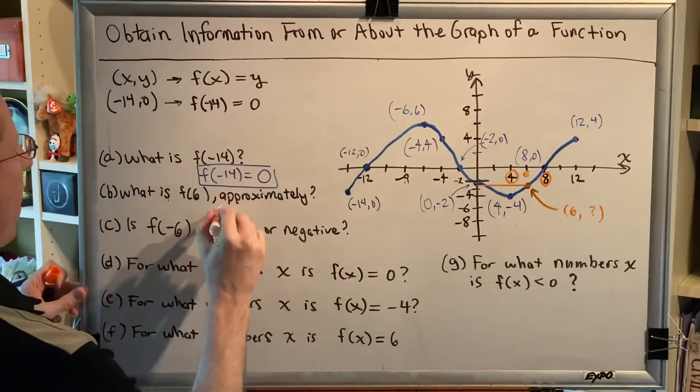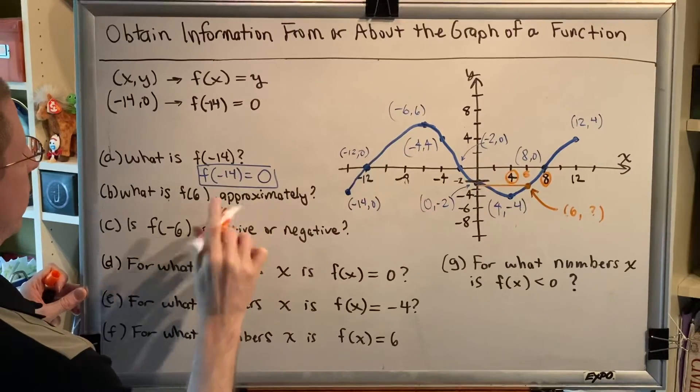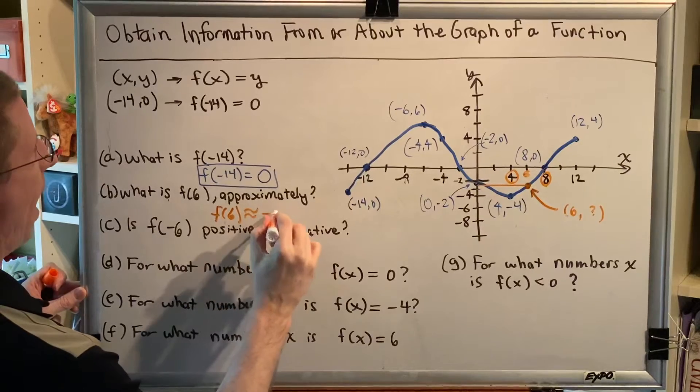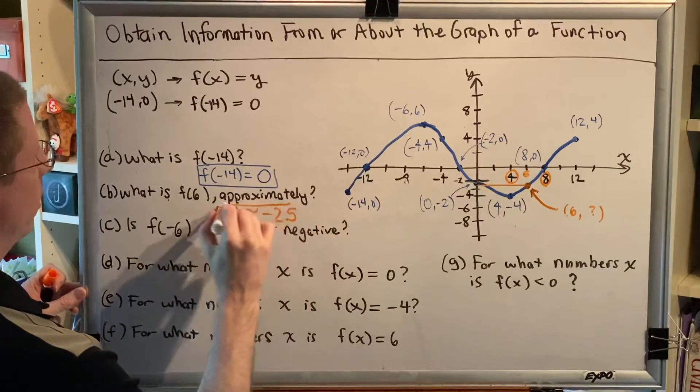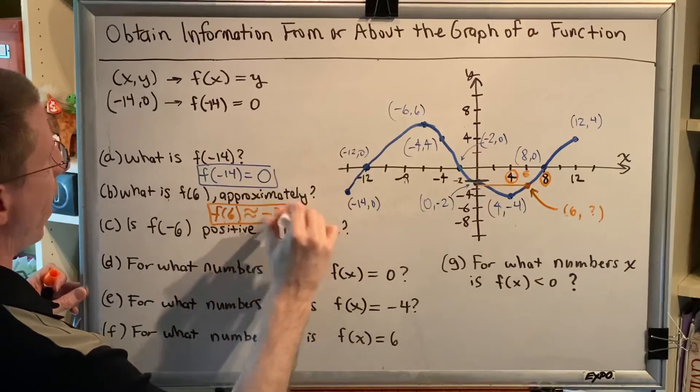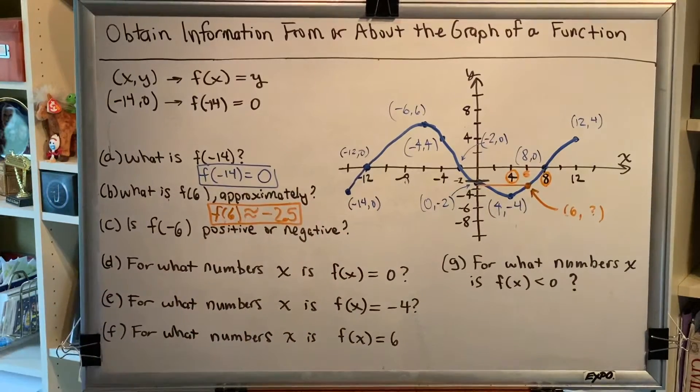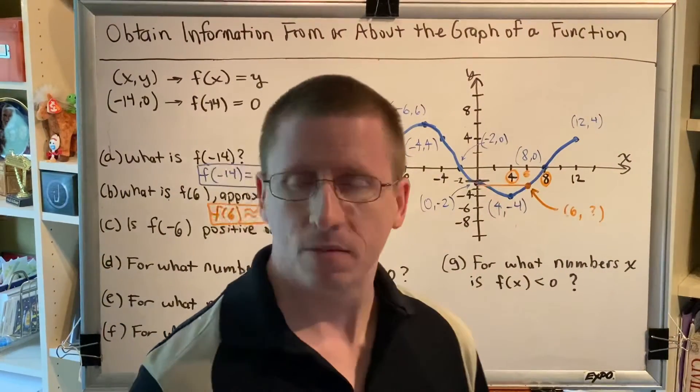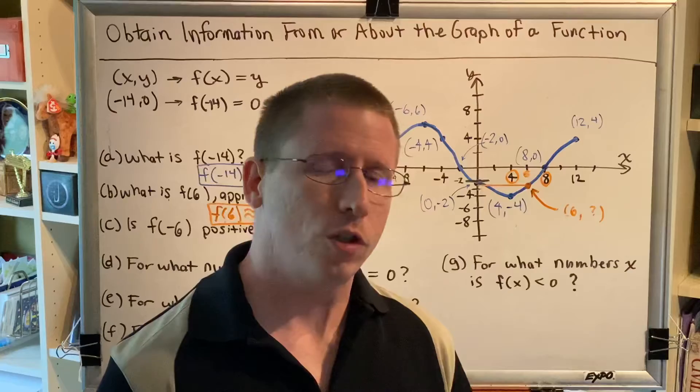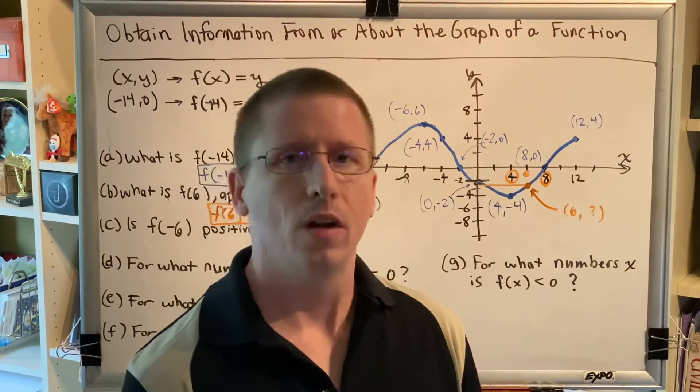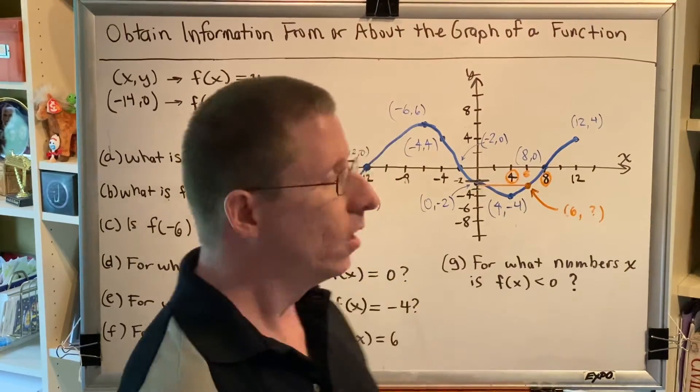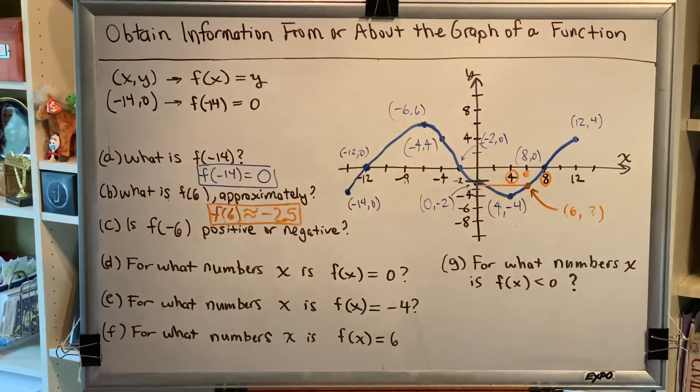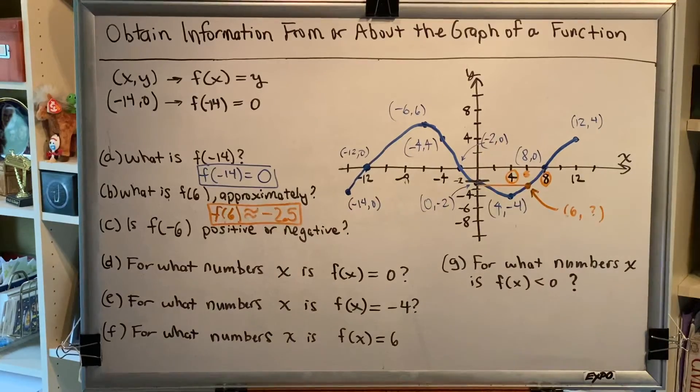So we can write that f(6) is approximately equal to negative 2.5. Now what if you looked at that graph and you said, no, I think it's negative 2.4. Would that be a correct answer? Sure. How about negative 2.6? Absolutely. But negative 2 is not a correct answer. Negative 3 is not a correct answer. There's a small amount of subjectivity whenever the question asks you to approximate.